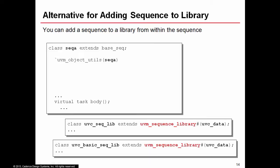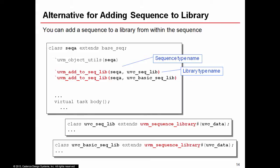As well as adding sequences inside the library, you can add sequences to a library from inside a sequence itself using the macros uvm_add_to_seq_lib. For example, inside SeqA, you can call uvm_add_to_seq_lib to add it to uvm_sequence_lib or to uvc_basic_seq_lib. This has some readability issues — it's much easier to see library contents when adding them within the library declaration itself. If you use this approach, always print your libraries to track what sequences have been added.